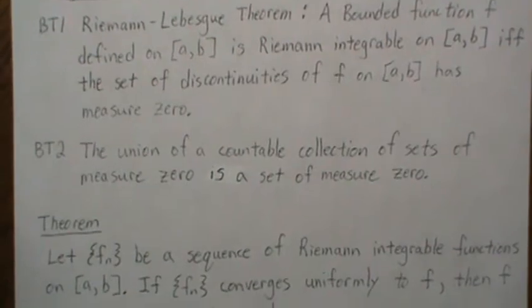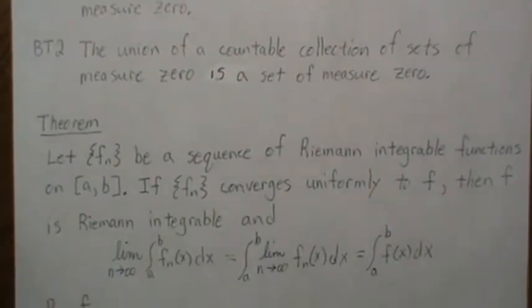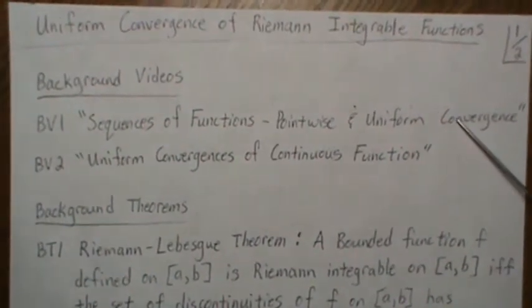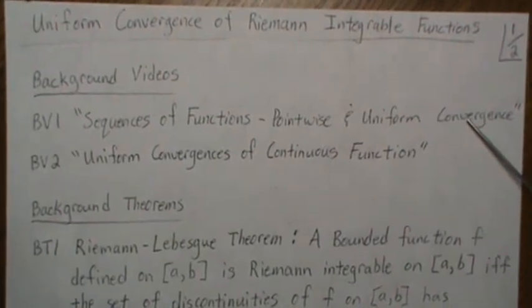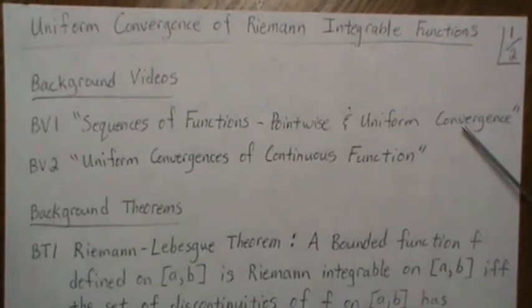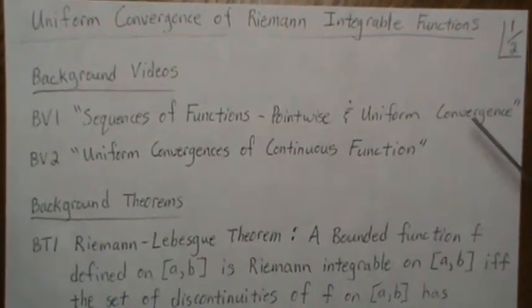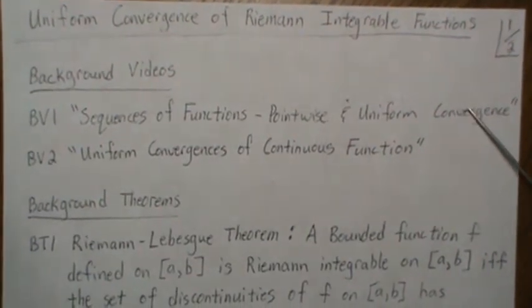So here's the theorem that we want to show. Before we get into this, in video 1 we showed that if we have a sequence of real-valued functions that converges, many of the properties of f_n don't carry over to the convergent value f.